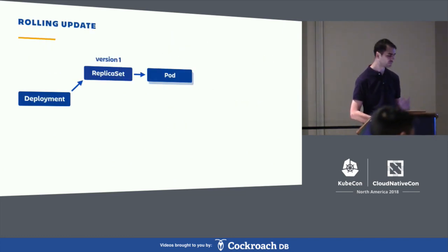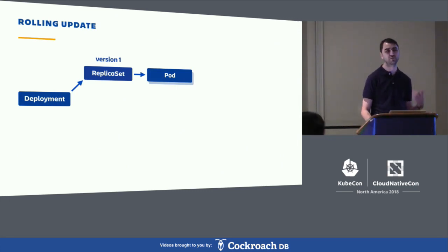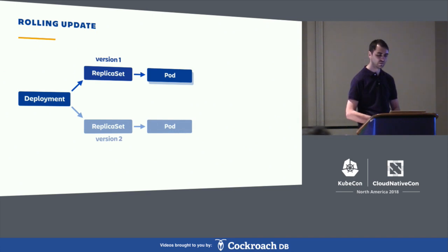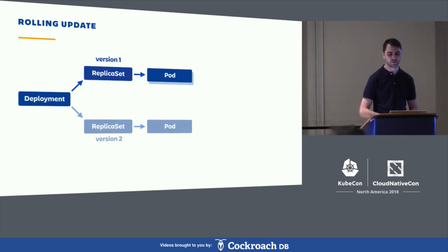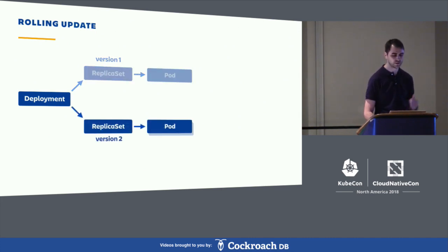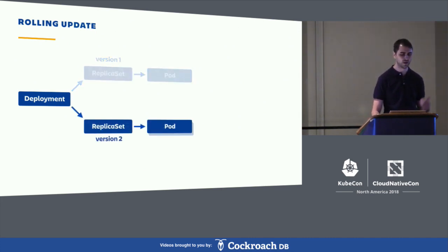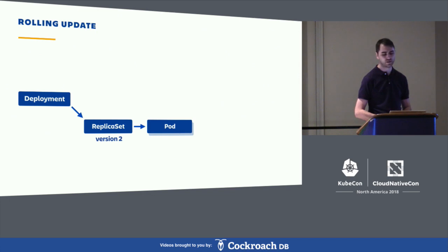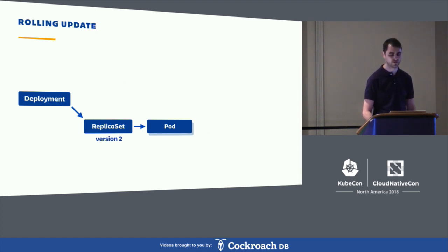A brief look at the rolling update strategy: deployments manage replica sets, and replica sets manage pods. When you first create your deployment, you get one replica set of version one, creating as many pods as you want. When you update the deployment spec, a new replica set is created, scaled up while the old one is scaled down. In the end, you again have just one active replica set. The old replica sets are not deleted immediately — it depends on the revision history limit parameter.